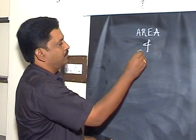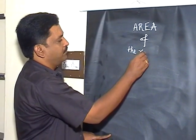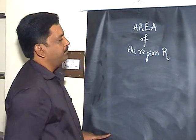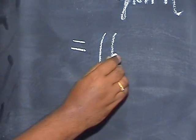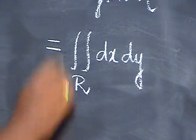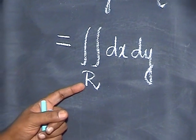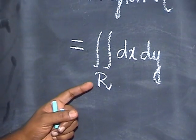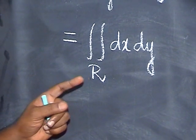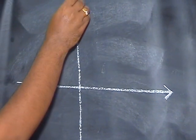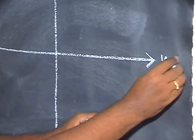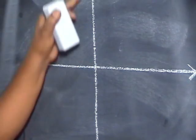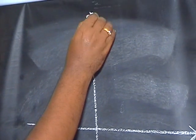The area of the region, say capital R, is equal to the double integral over the region R of dx dy. This region R which I am going to explain today is the rectangle whose length is L and breadth is B. In the Cartesian coordinate system, we have two axes. One is the X axis, which we call the line Y equal to 0, and the Y axis as the line X equal to 0.